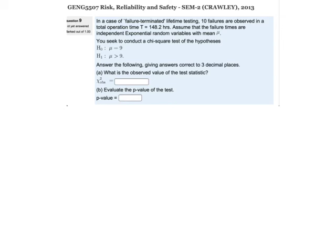Well, the first thing we need is an equation for chi-squared. So, χ² equals 2T over μ₀, which in this case is equal to 2 times 148.2, all divided by 9. 2 times 148.2 divided by 9 equals 32.93.